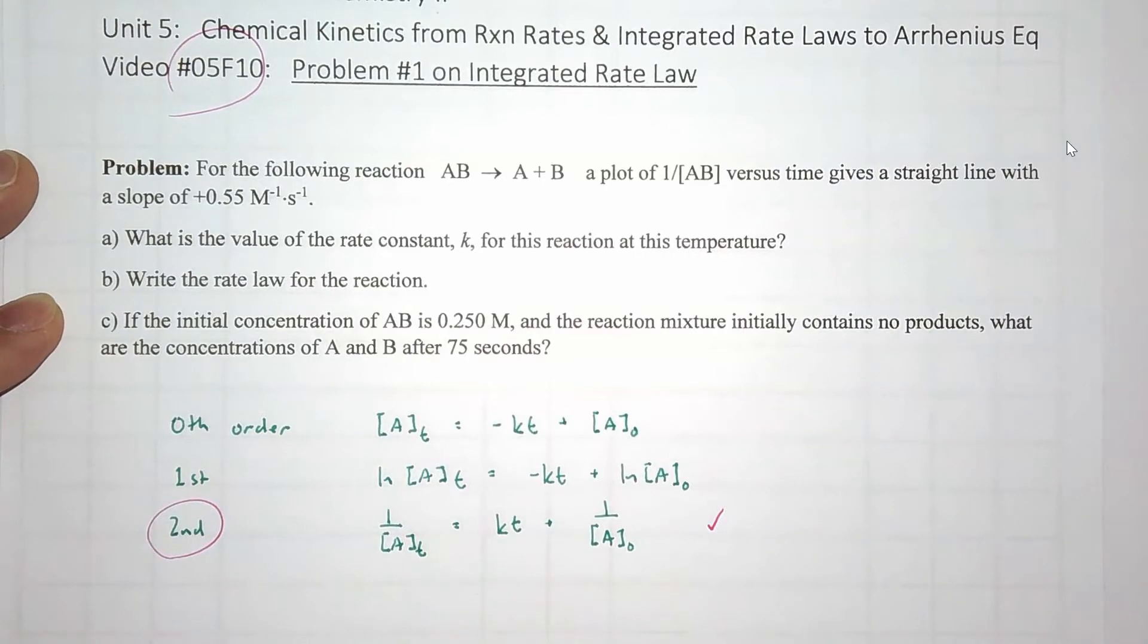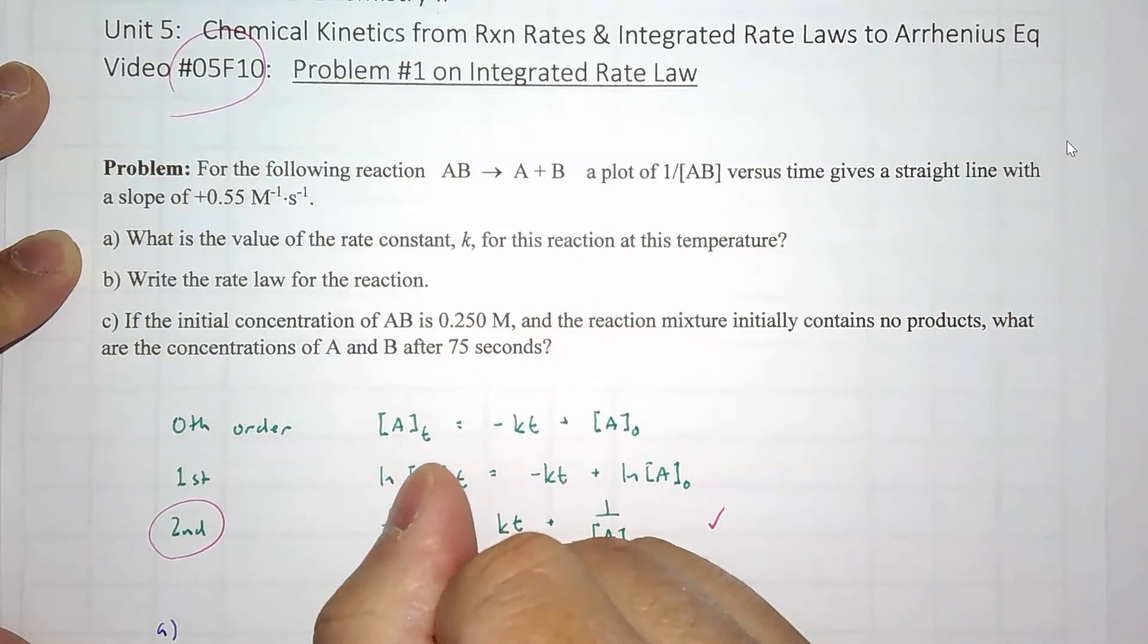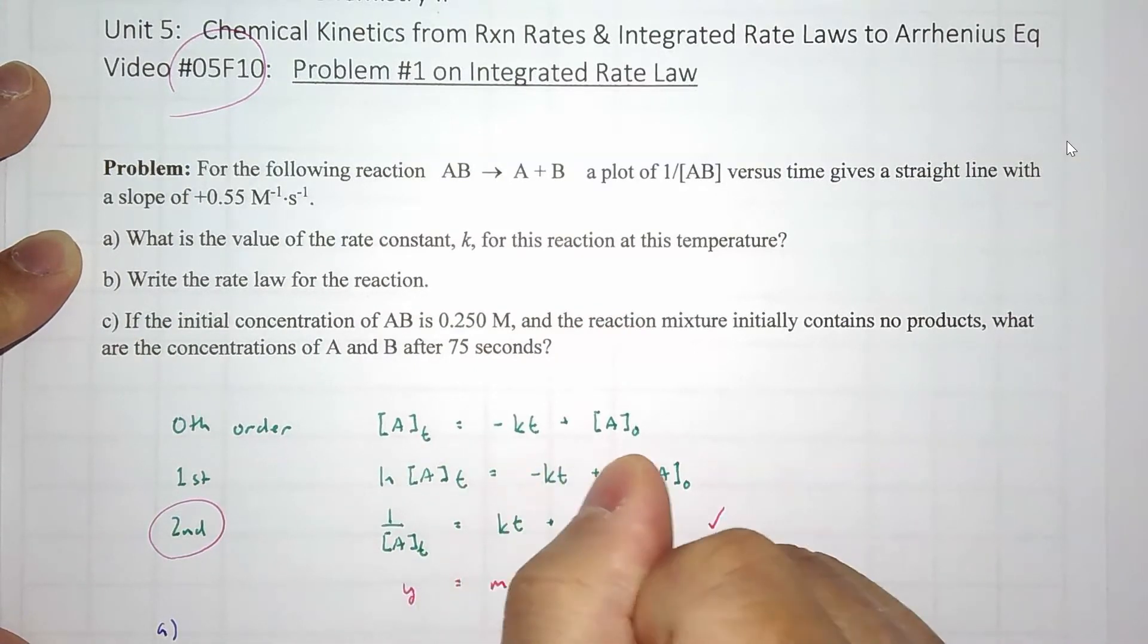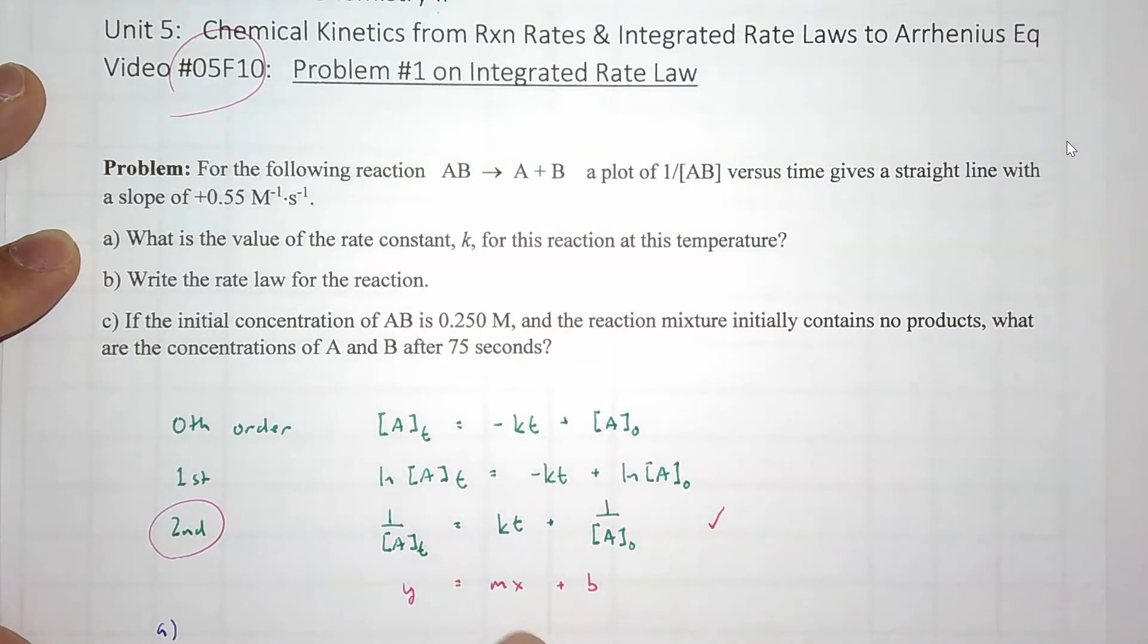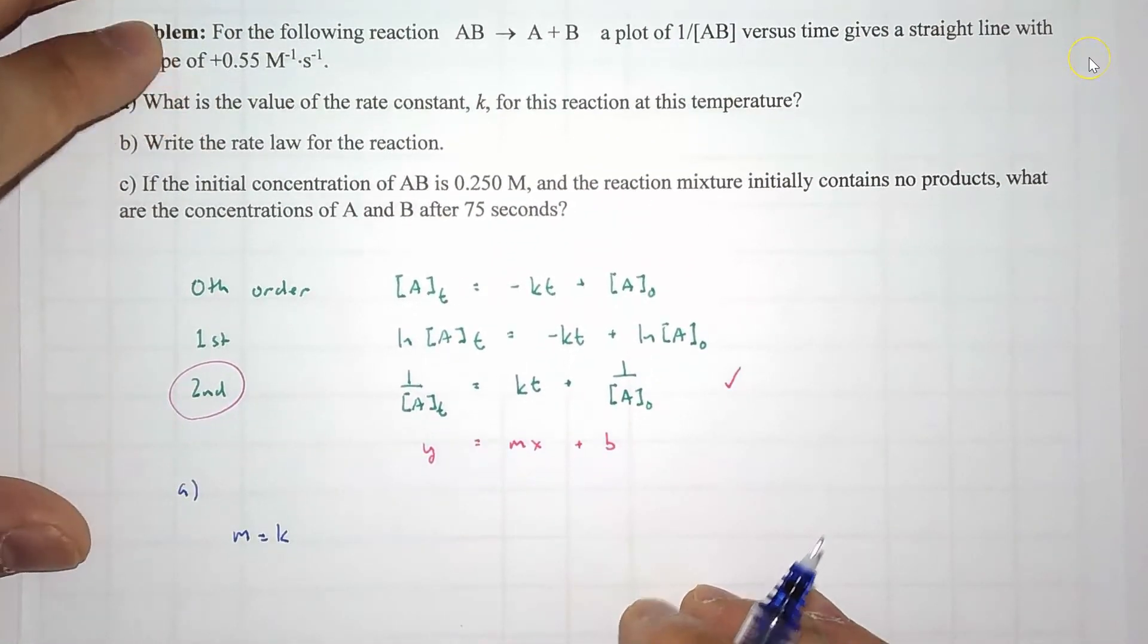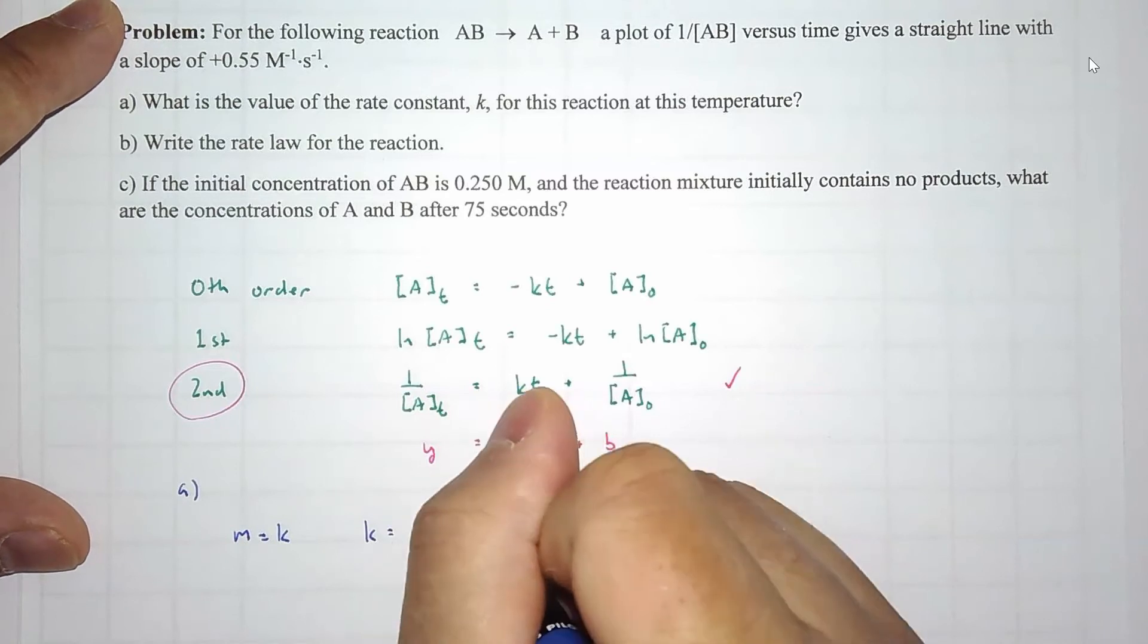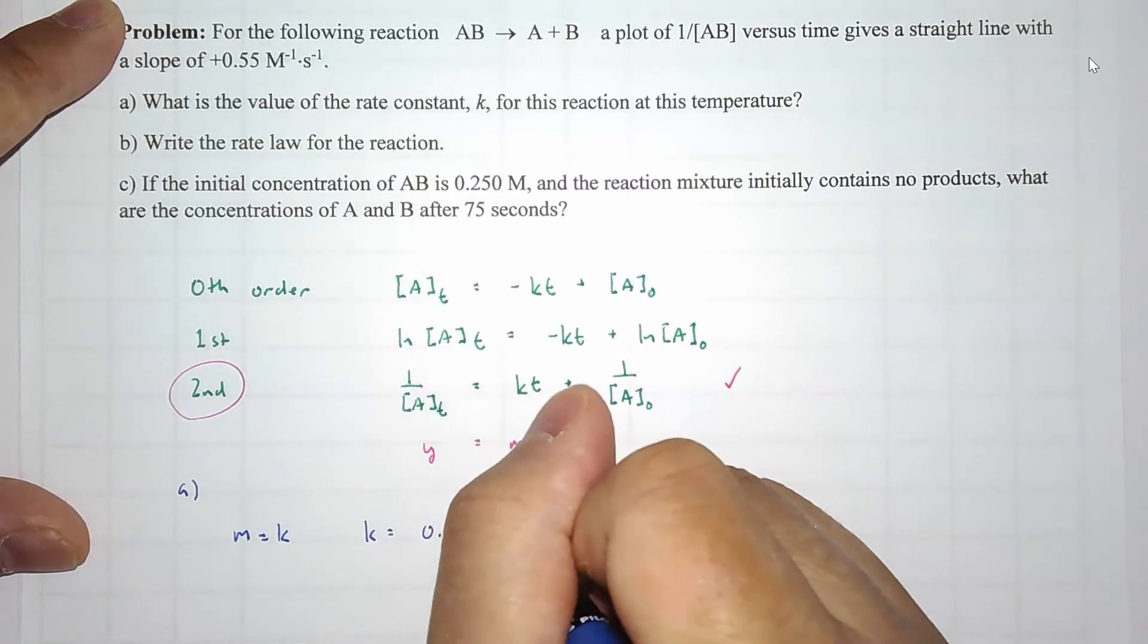Now, if it's second order, we could right away answer part A. Because this is the equation of a line, y equals mx plus b, or it's in the form of an equation of a line. That slope m equals k. So for second order, m equals k. And they told us that the slope is 0.55. So k equals that slope, 0.55. And the units make sense.